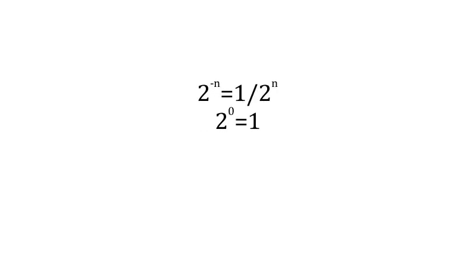The natural way to generalize these laws to negative integers and 0 is to define 2 to the negative n to be 1 divided by 2 to the n, and 2 to the 0 to be equal to 1.